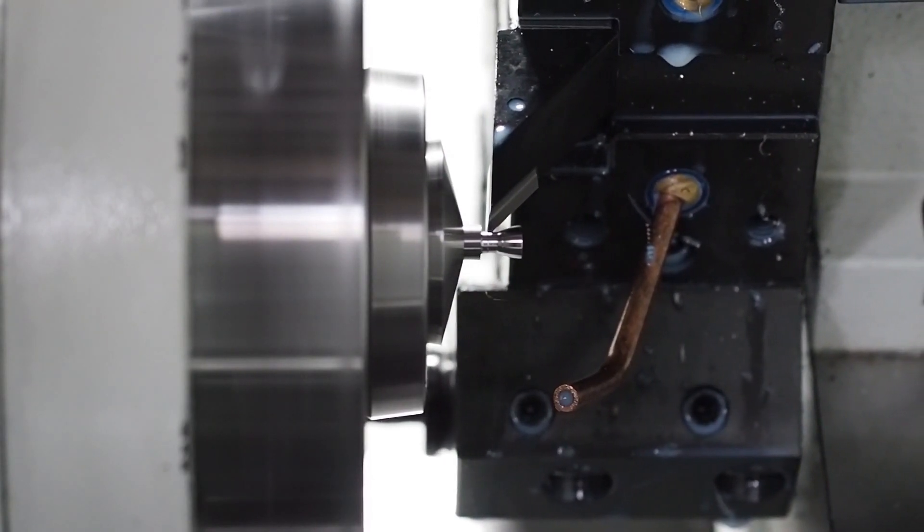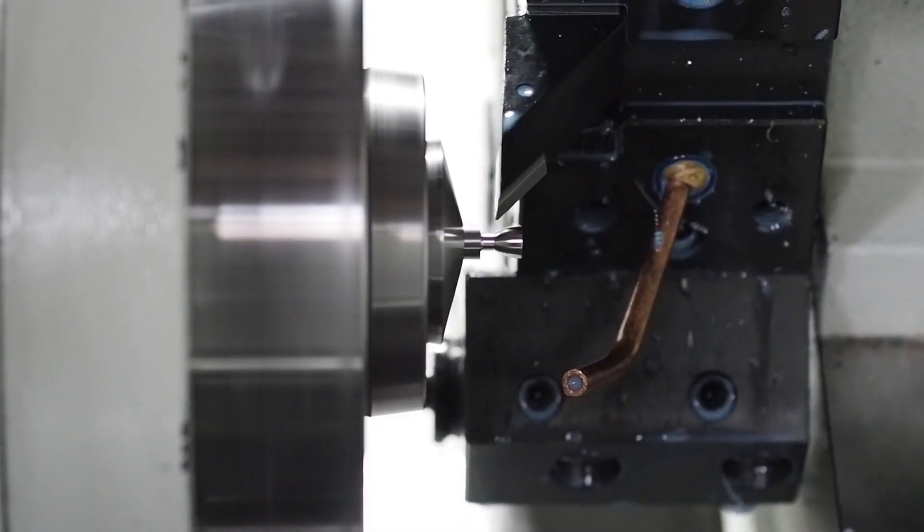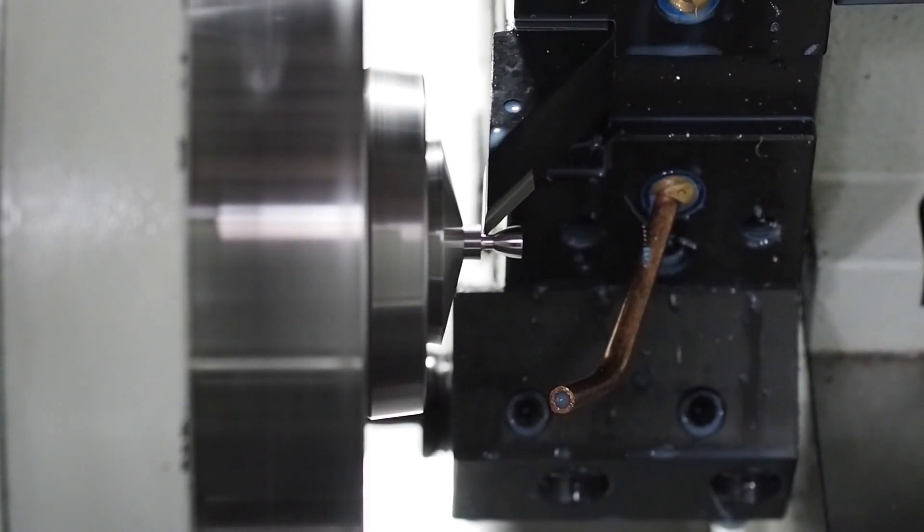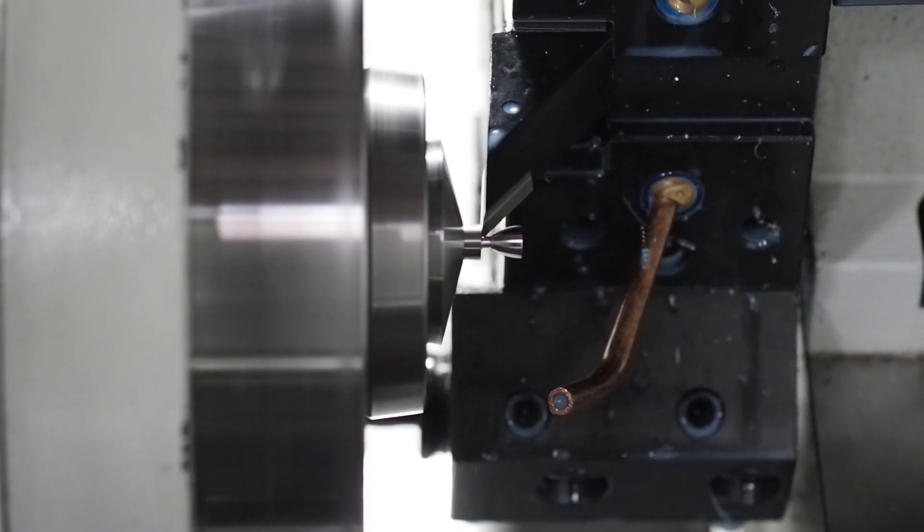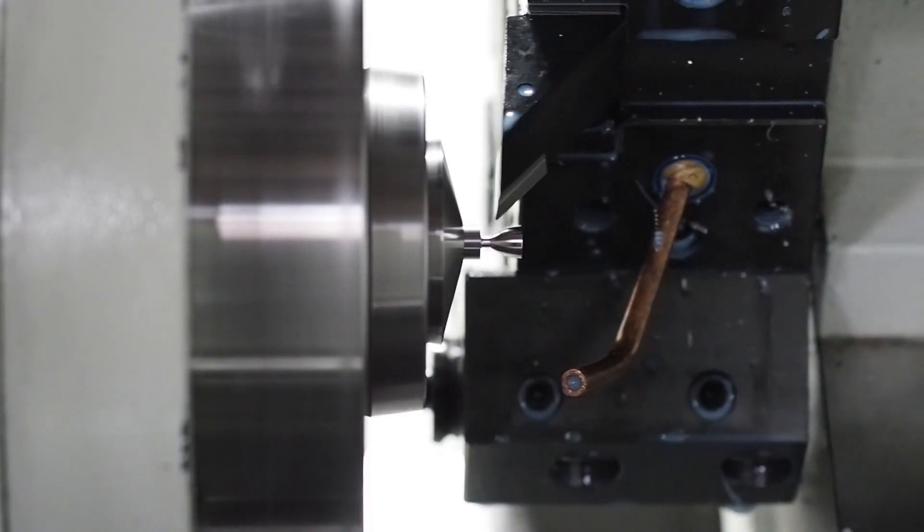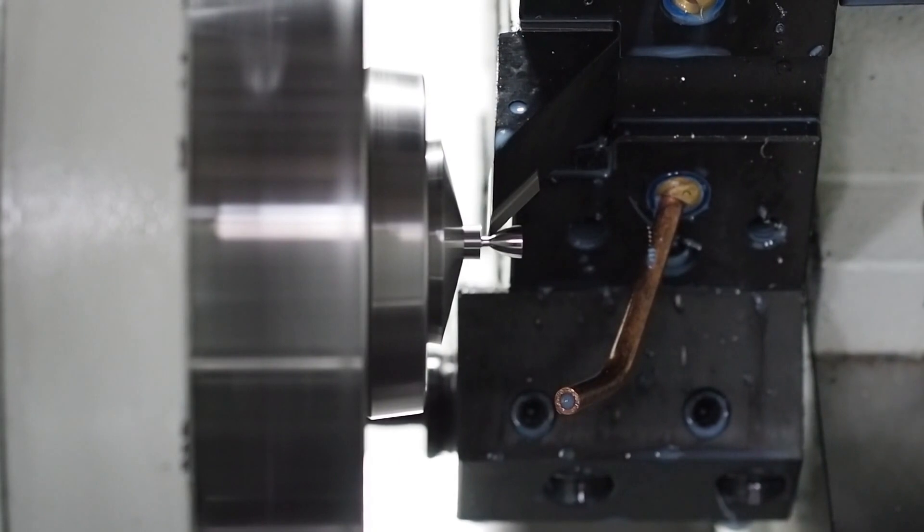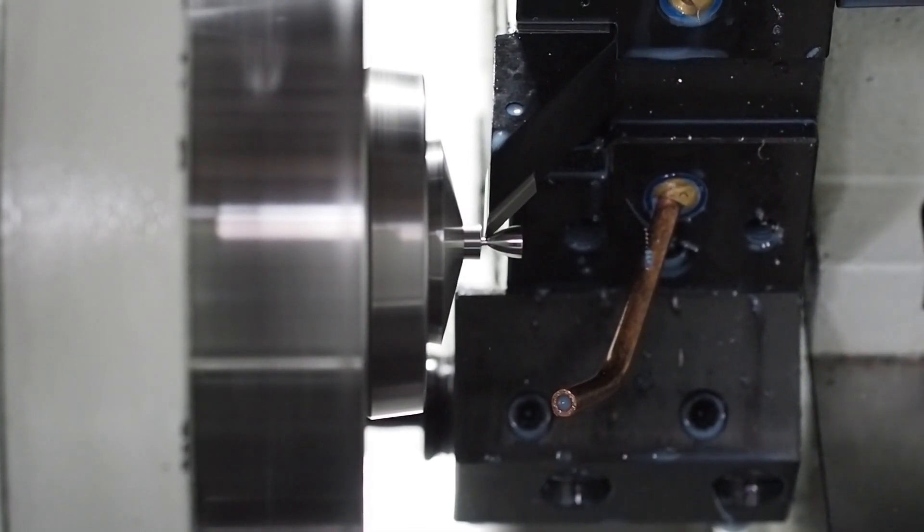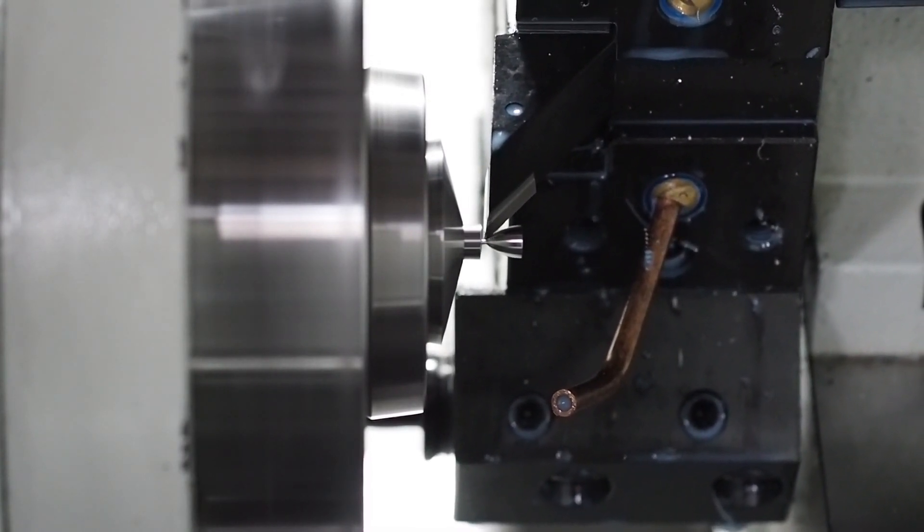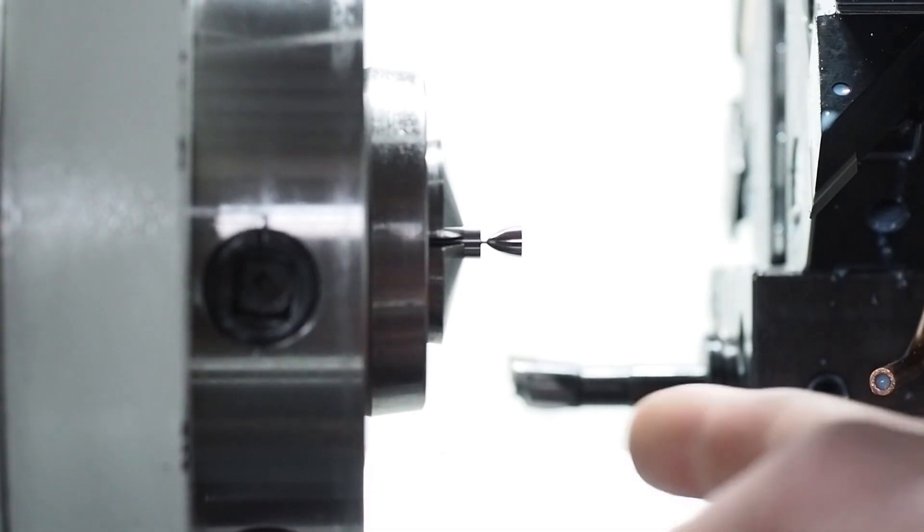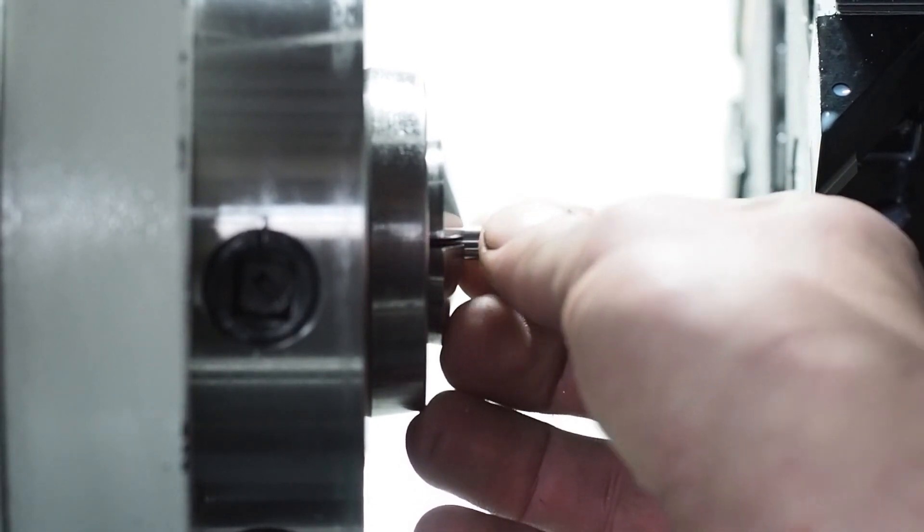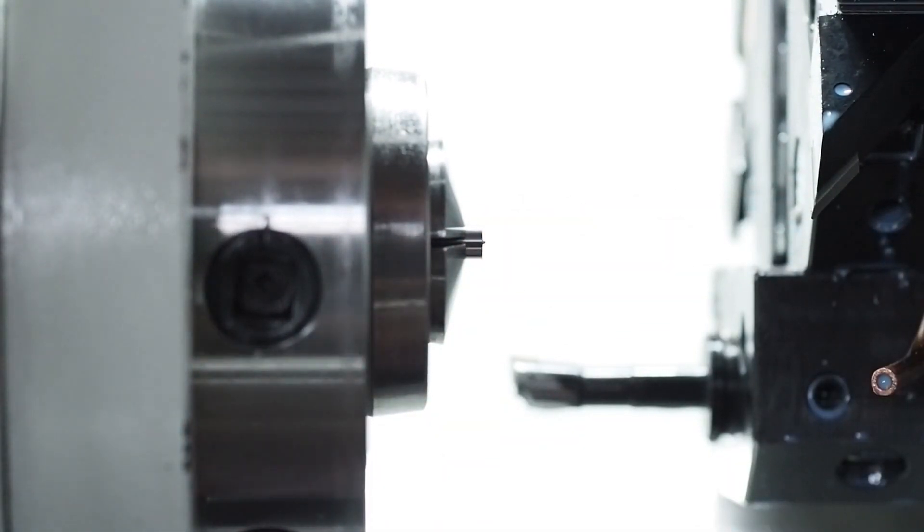Here we go. The best part is I don't have a part catcher, so I've been playing around with how much stock to leave. And I left just enough so that it stays on there. You can pop it right off. Look at that, we're making a chip.